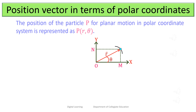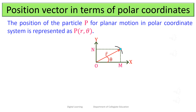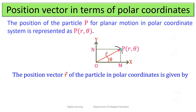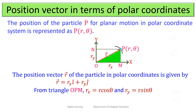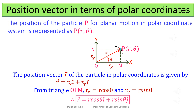The position of the particle P for planar motion in the polar coordinate system is represented as P(r, θ). The position vector r in polar coordinates is given by vector r = rₓ î + r_y ĵ, where rₓ is the component of r along x and r_y is the component along y. From triangle OPM, rₓ = r cos θ and r_y = r sin θ. Therefore, the position vector in polar coordinates is: vector r = r cos θ î + r sin θ ĵ.